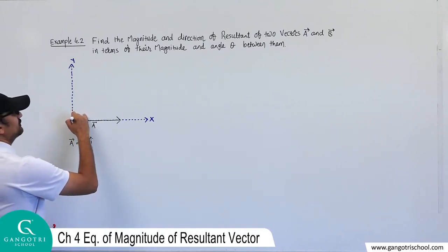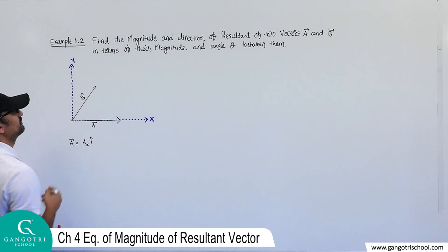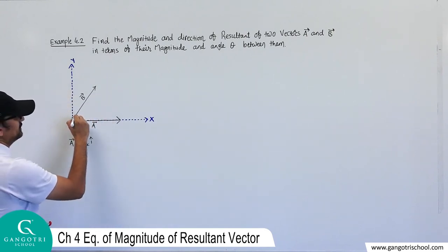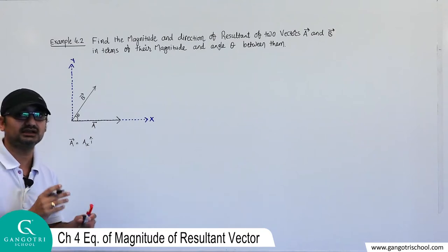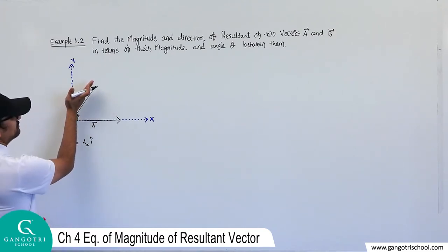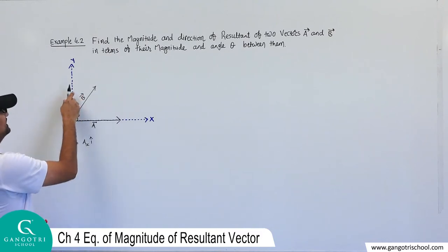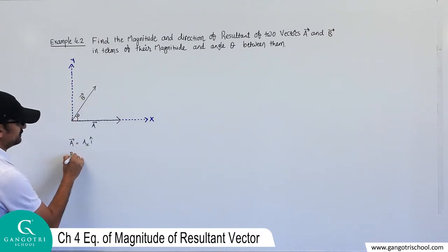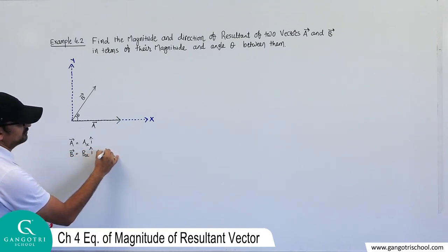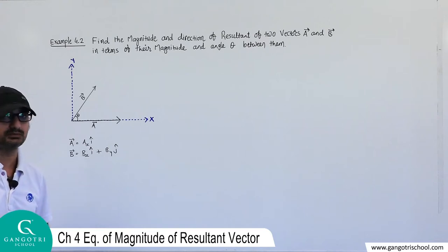Now let's assume another vector B, and suppose the angle between vector A and vector B is theta. Vector B has two components — x component and y component — so the equation of vector B is Bx·î + By·ĵ.